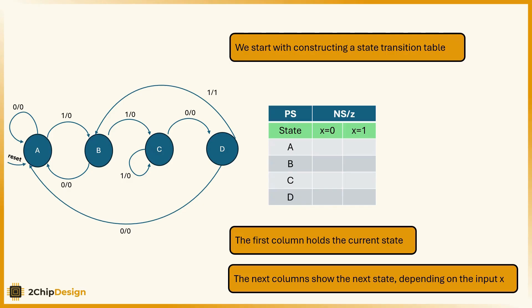We start with constructing a state transition table. The first column holds the current state. The next columns show the next state, depending on the input x.